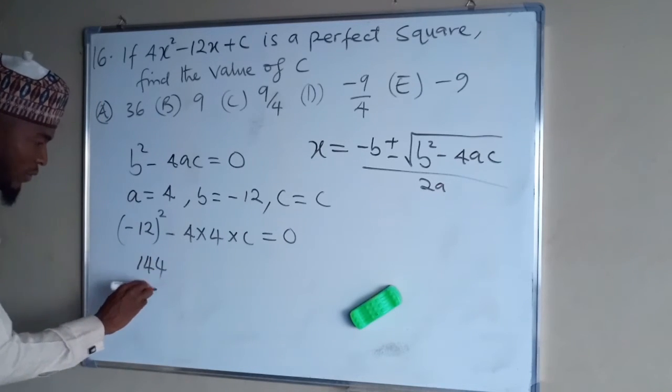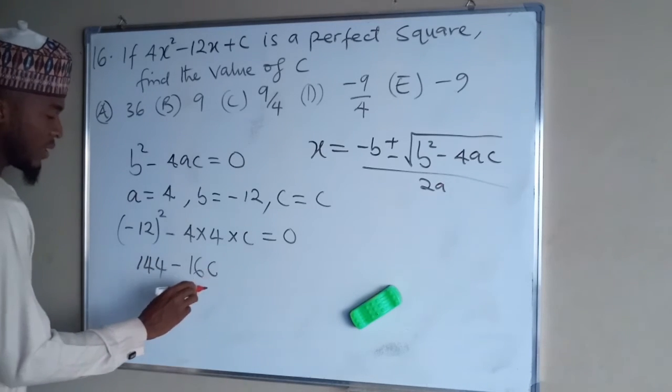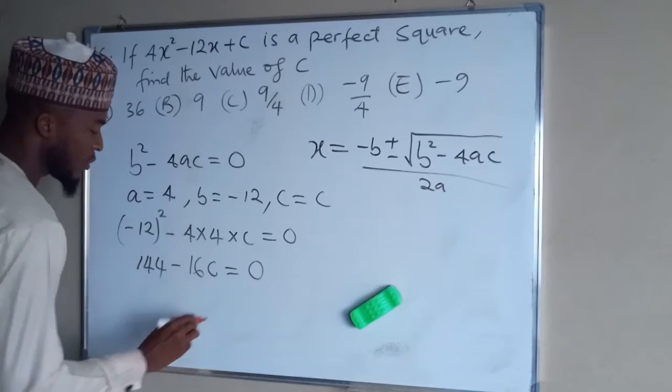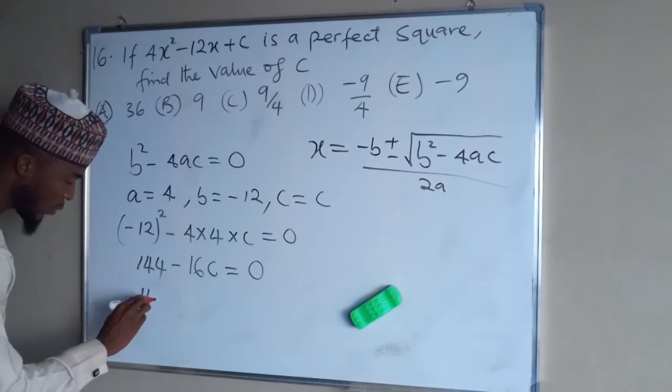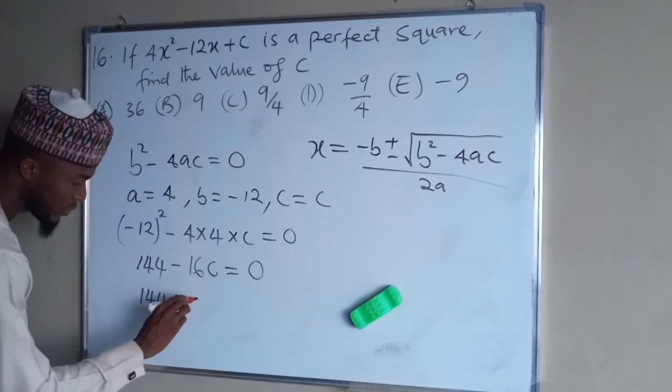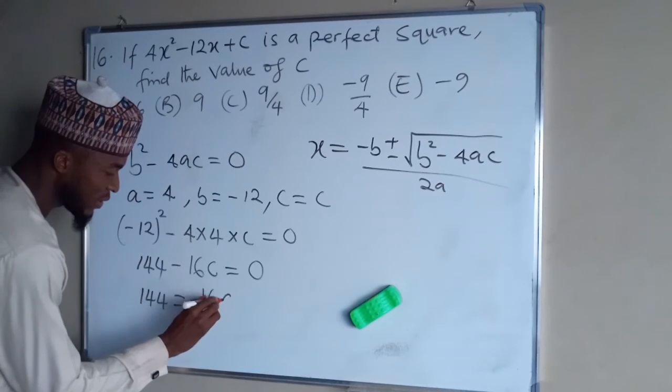This is 144 minus 16C equals zero. Now, if you take this one to the right-hand side, it becomes positive. So we have 144 equals to positive 16C.